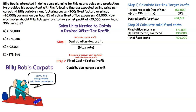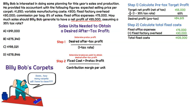In step two, we calculate total fixed cost. Costs can be variable or fixed. The question tells us there are two components to fixed cost: fixed office expenses of $75,000 and fixed factory overhead of $30,000. Adding those together, we have total fixed costs of $105,000.